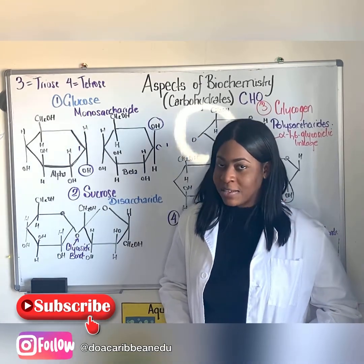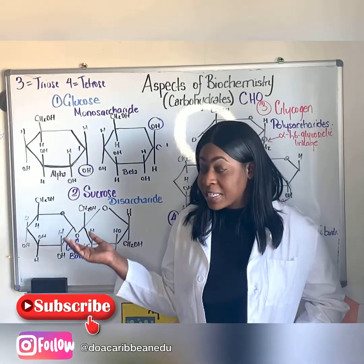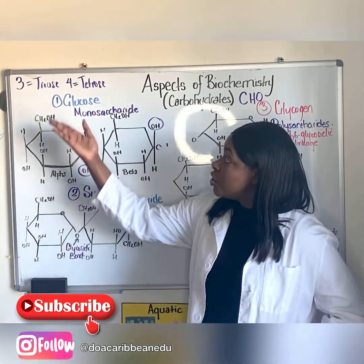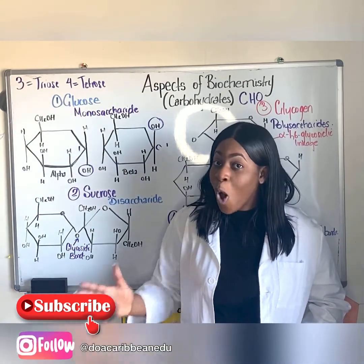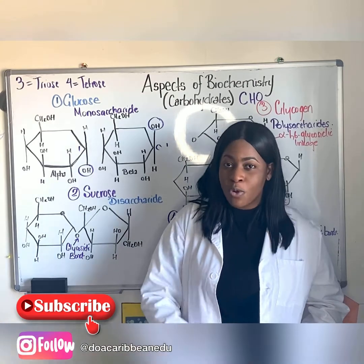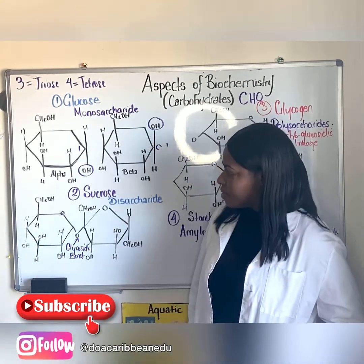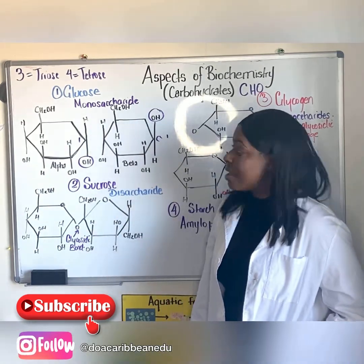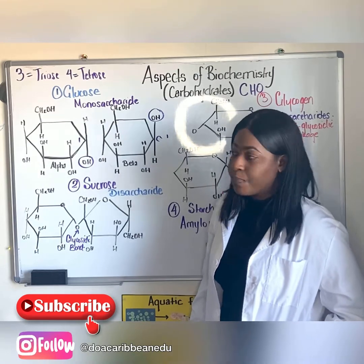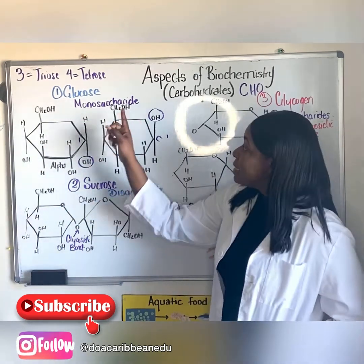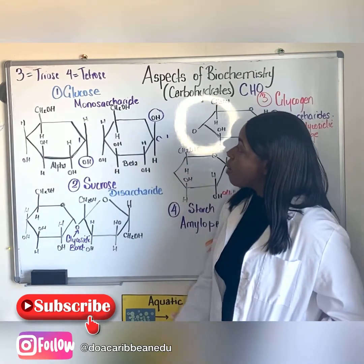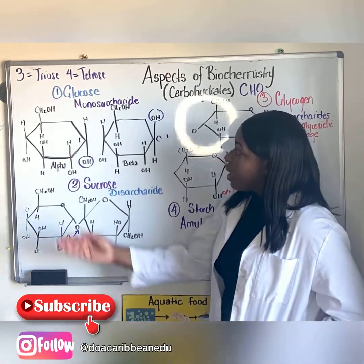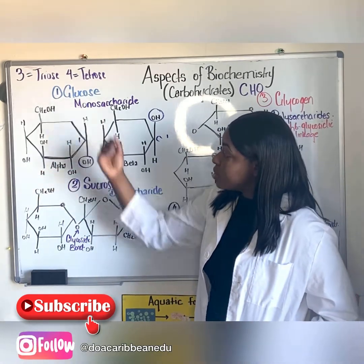Now there are three main ways to classify carbohydrates. We can classify them according to the number of sugar constituents, the number of carbon atoms, and according to the functional group present. Starting with classification by the number of sugar constituents — monosaccharide: mono means one, saccharide means sugar, so a monosaccharide is made up of one sugar molecule. Here is an example of a monosaccharide: glucose.